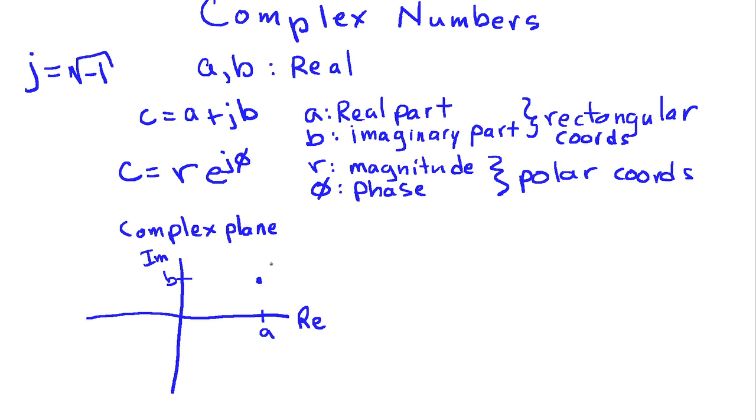So this is our complex number c. Now I can also represent this number in polar form by looking at the magnitude of the number. So let's call the length of this distance here, we'll call that r, and then I have a phase angle, phi, that it makes with respect to the positive real axis. So this is how these two representations describe the complex number c.